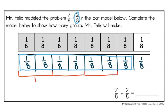So I have 1 group, I have 2 groups, and I have 3 groups. And then here at the end I have 1 eighth left over. I can see that that is 1 out of 2 boxes, so that would be half of a group. So 7 eighths divided by 2 eighths is equal to 3 and a half.